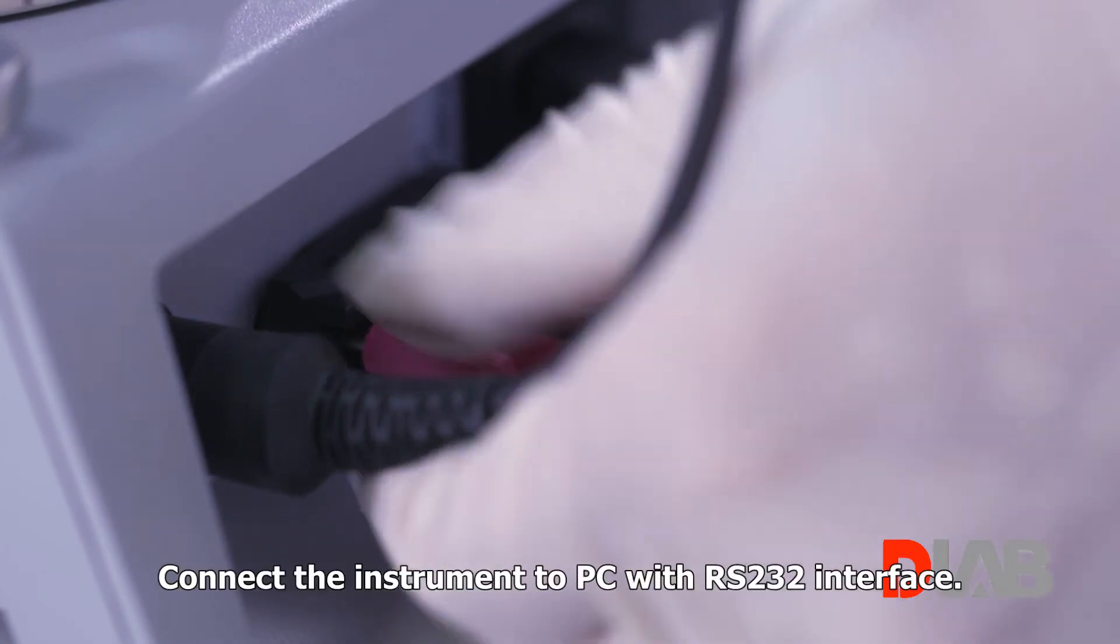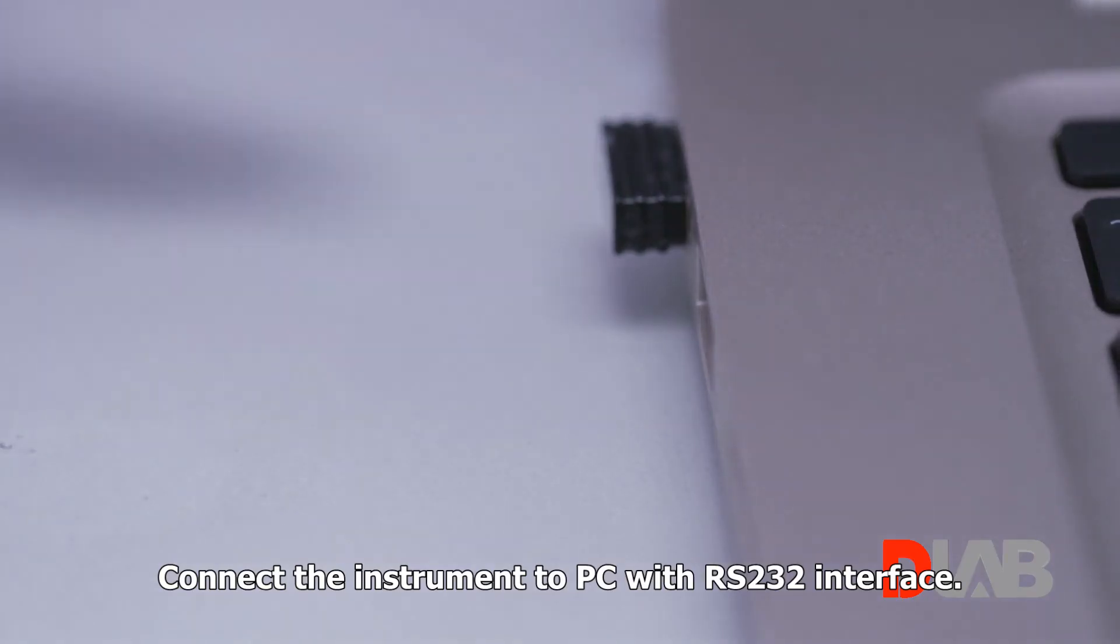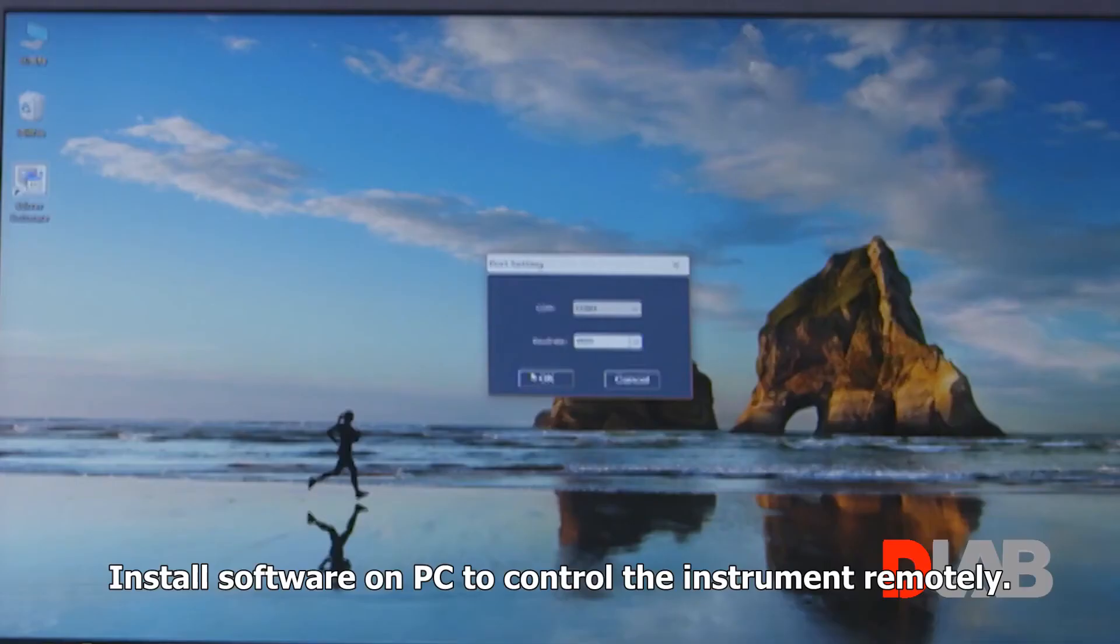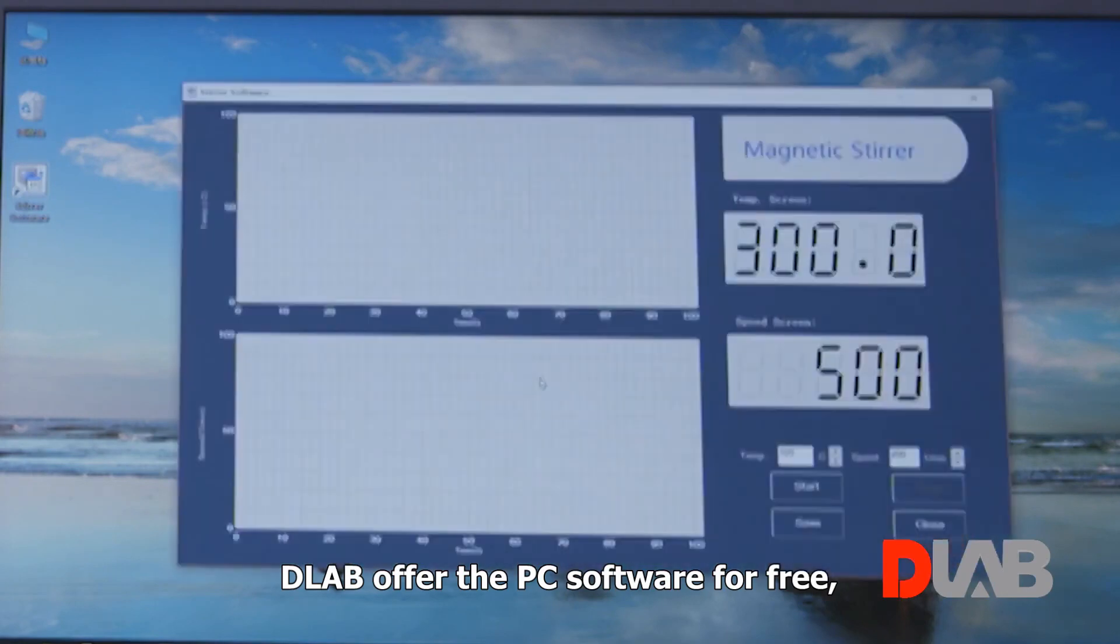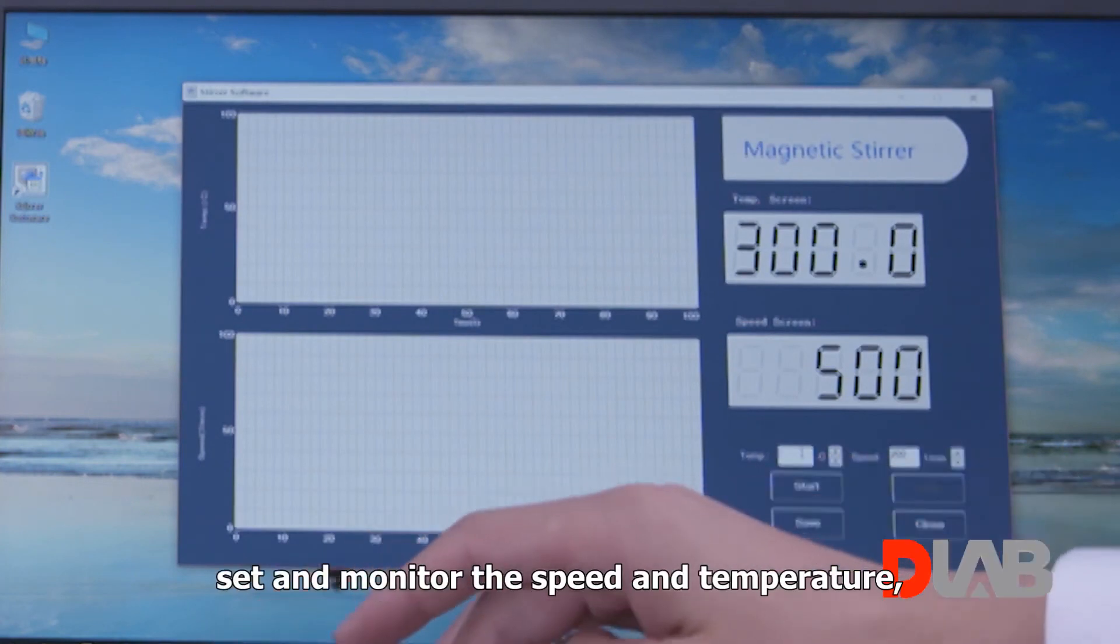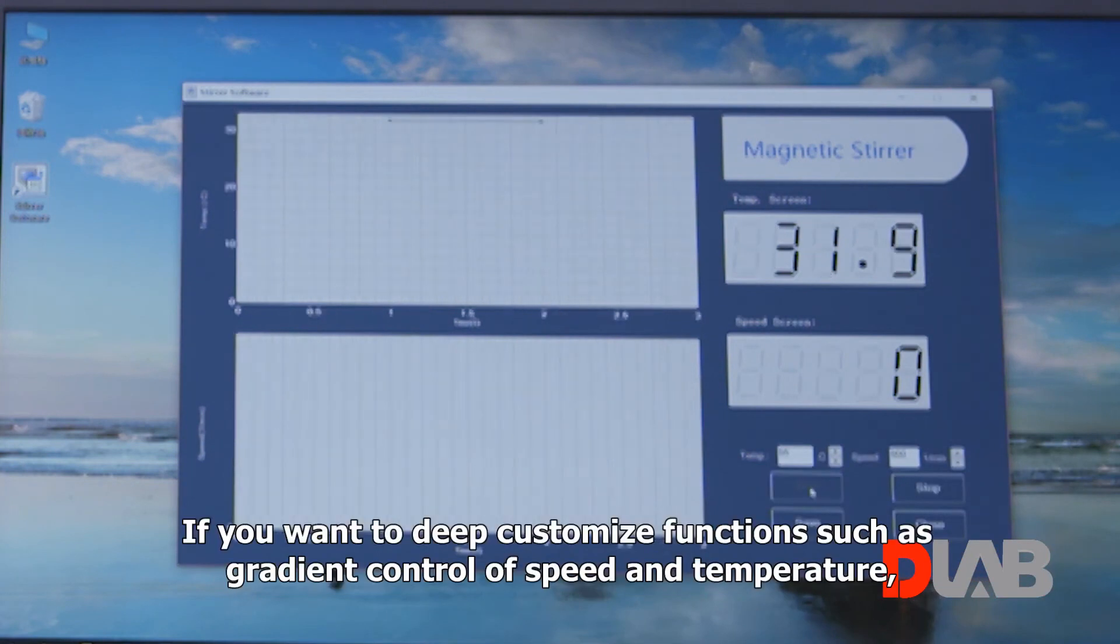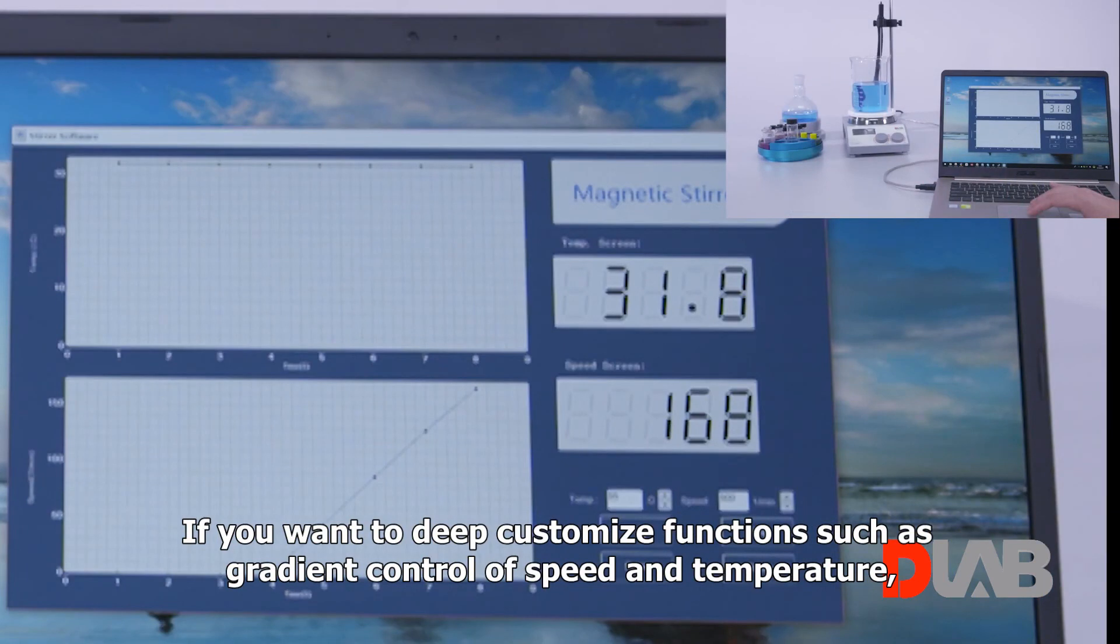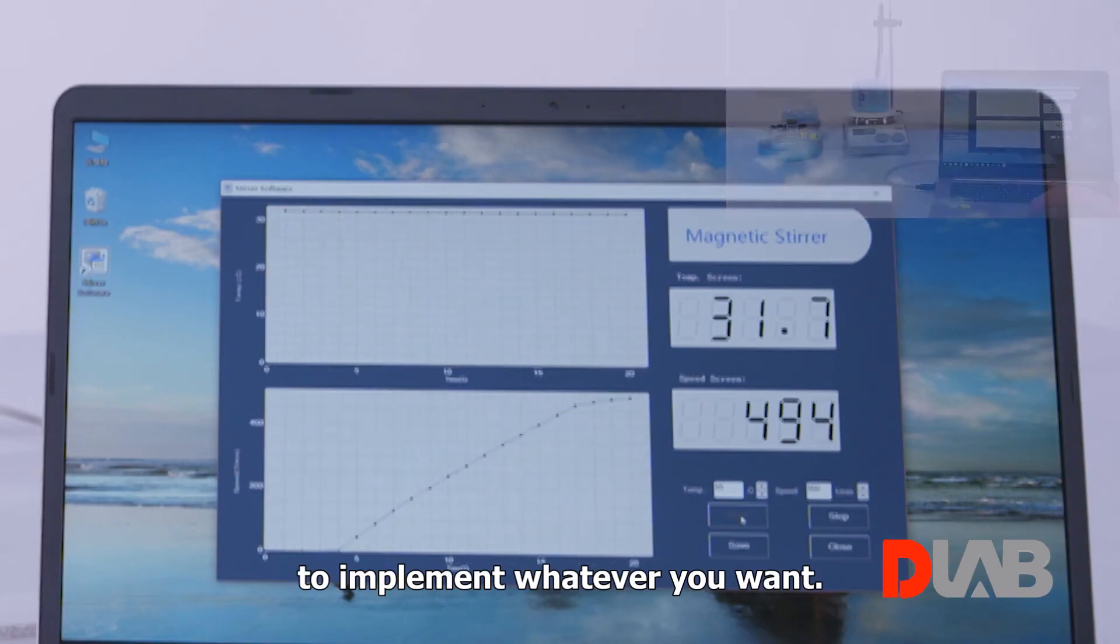Remote control. Connect the instrument to PC with RS232 interface. Install software on PC to control the instrument remotely. D-Lab offers the PC software for free to start and stop running, set and monitor the speed and temperature, upload and save experiment data. If you want to deep customize functions such as gradient control of speed and temperature, you can follow the RS232 communication protocol from D-Lab to implement whatever you want.